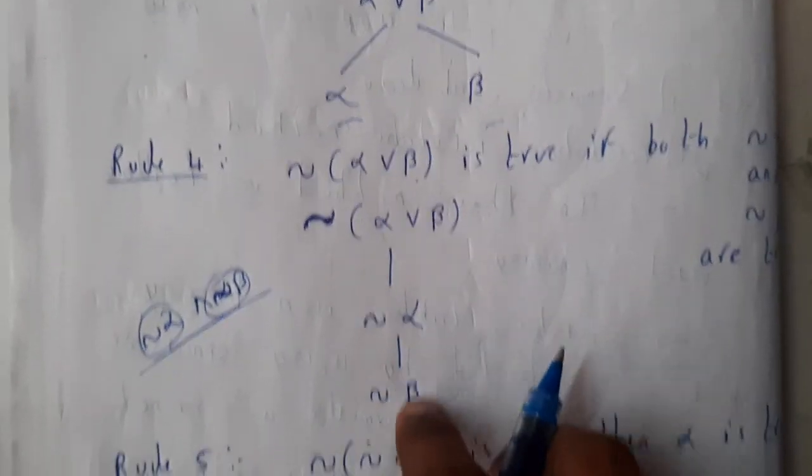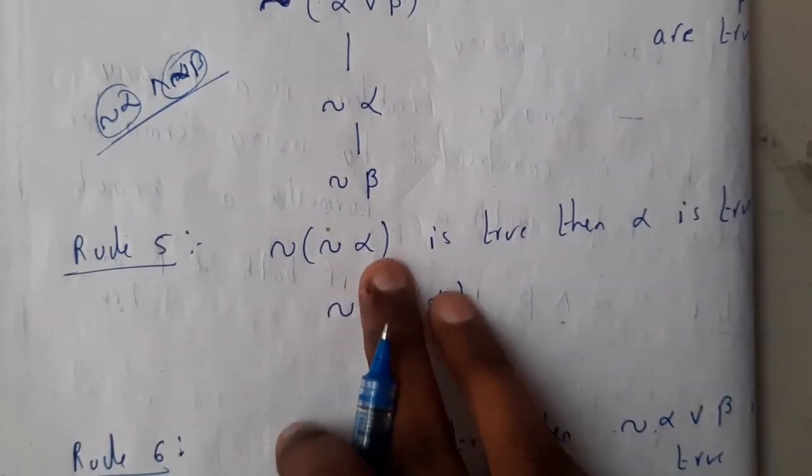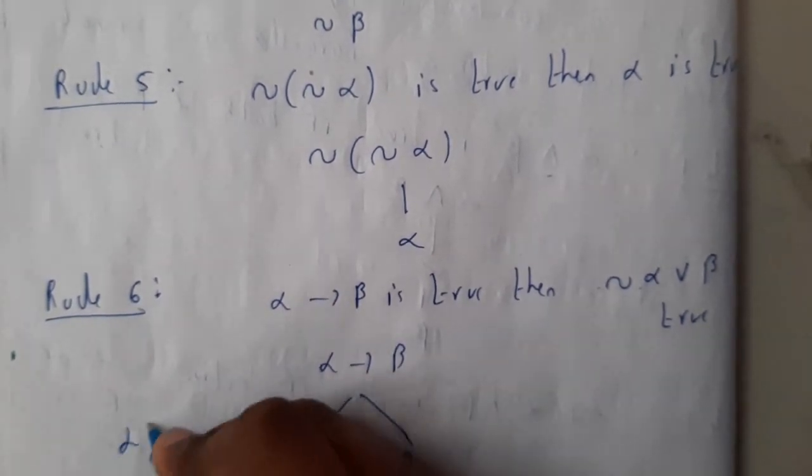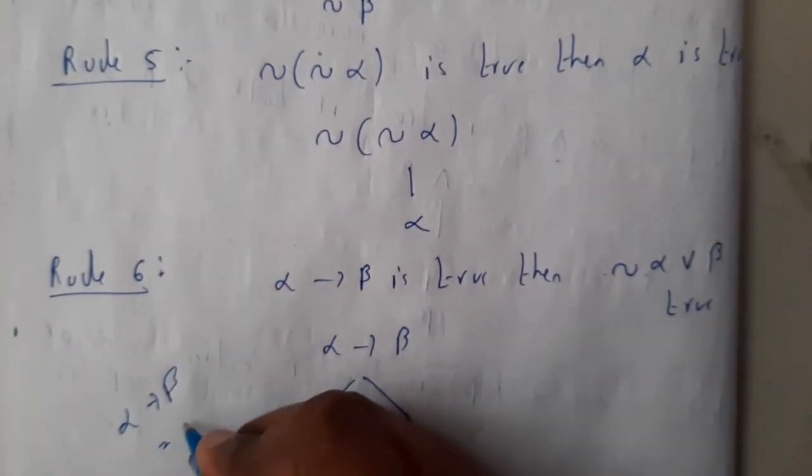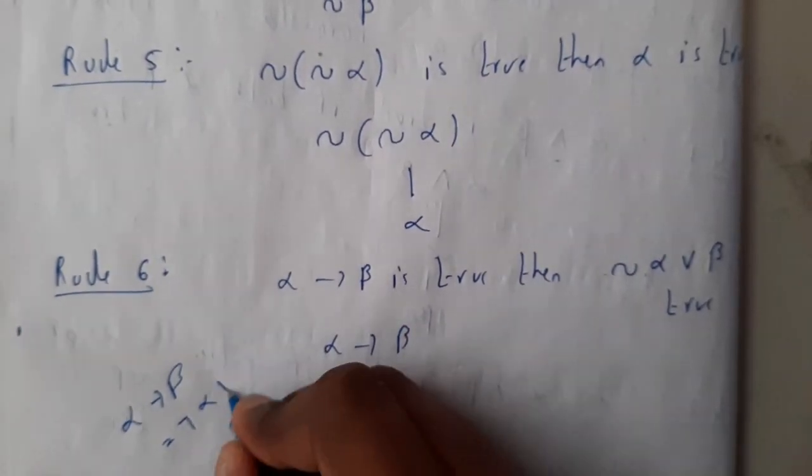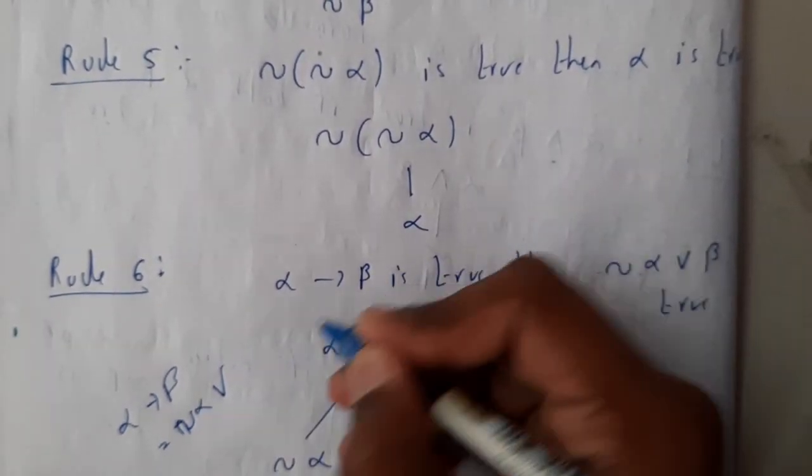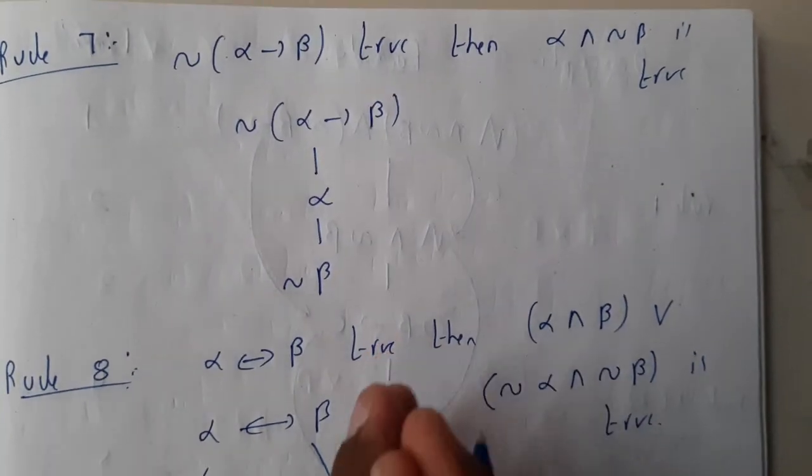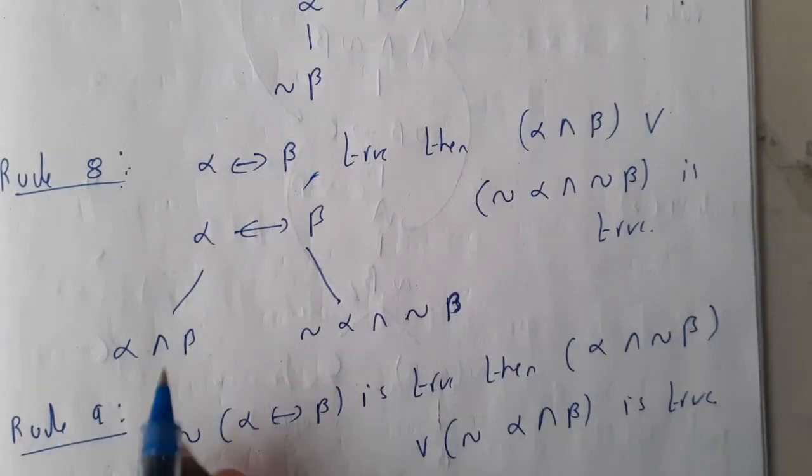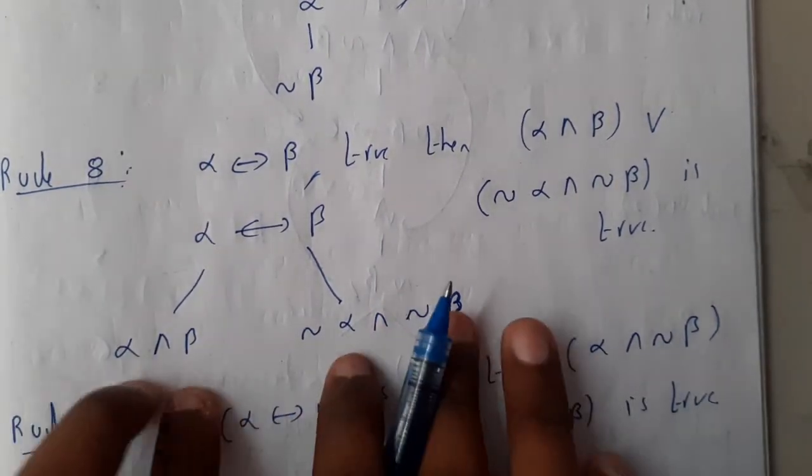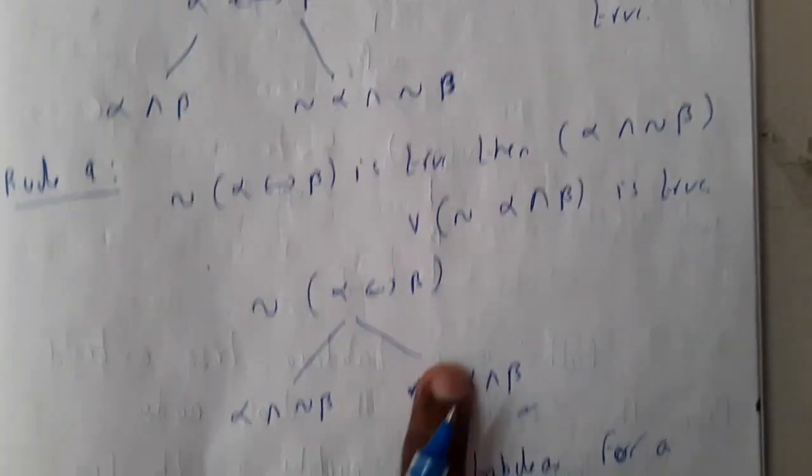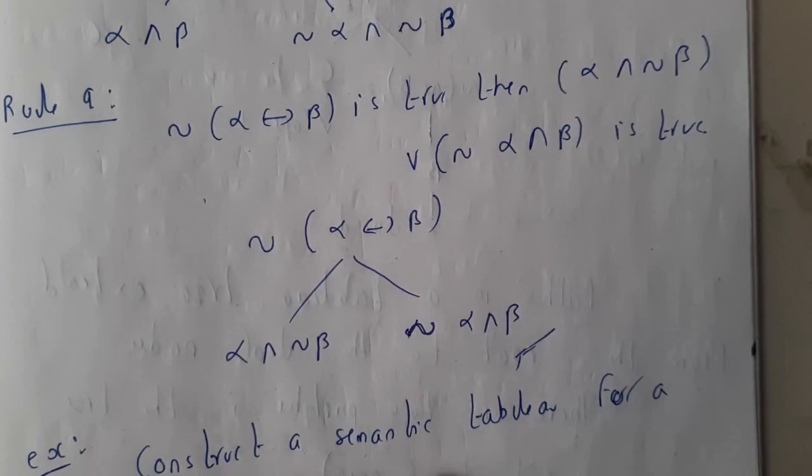Negation of negation of alpha is nothing but alpha. Alpha implies beta: I hope everyone knows the formula. Alpha implies beta can be written as NOT alpha OR beta, so you'll be writing OR. Similarly for double implication you'll be having two different. Even if you want you can further divide this also. Similarly for double implication negation also same.